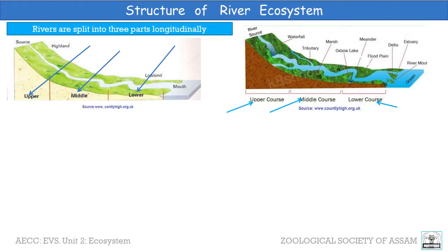The lower course is the large course of a river as it approaches the sea. The river usually has a wide, smooth channel and water moves at its slowest. One might find here large flat plains, estuary, deltas, etc. The river mouth is the confluence of the river as it approaches towards the ocean.